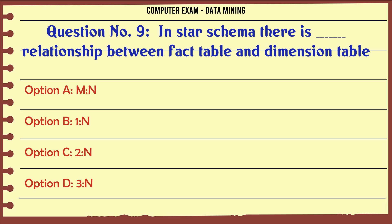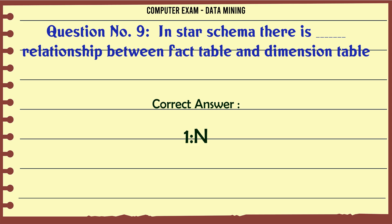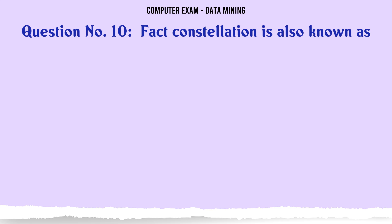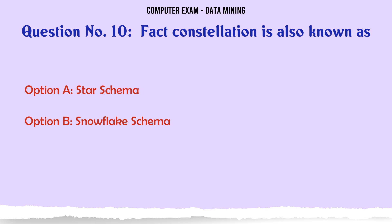In Star Schema, there is a Dash relationship between Fact Table and Dimension Table. A. M:N. B. One:N. C. Two:N. D. Three:N. The correct answer is One:N.